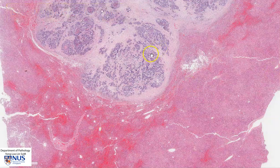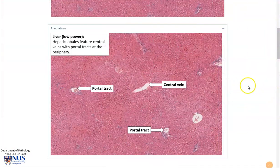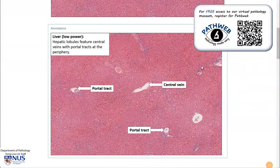Before we look at the metastatic deposit, let's do a quick recap of normal liver histology. This page is taken from our normal histology atlas from PathWeb, which is our free online pathology resource. You can register for free access of the entire resource, including a virtual pathology museum, and the link is in the video description.